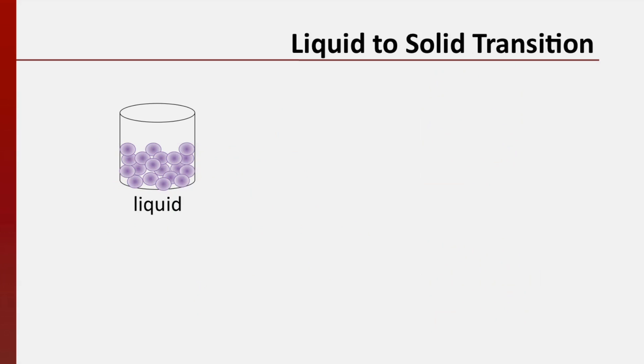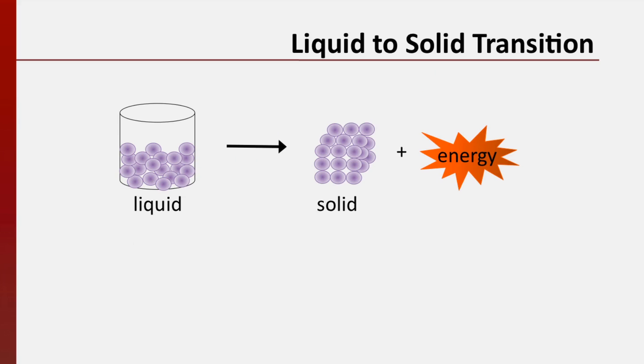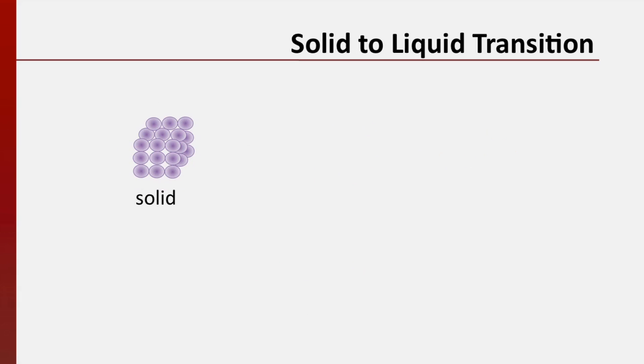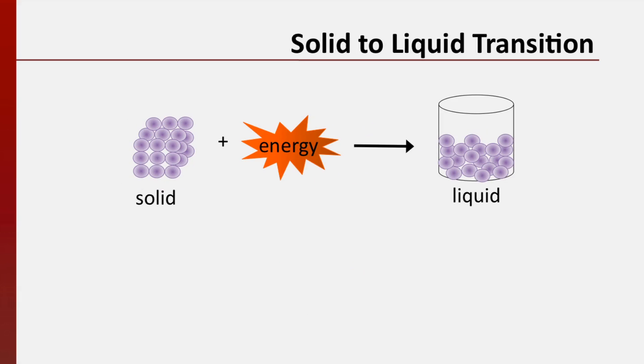Generally speaking, when a substance transitions between phases, intermolecular forces between neighboring molecules are either formed or broken. When a substance transitions from a liquid to a solid, intermolecular forces, or bonds, are formed and energy is released to the surroundings — this is called the latent heat of fusion. Going in the other direction, when a substance transitions from a solid to a liquid, energy is required to overcome intermolecular forces, so this is an endothermic process. Energy is absorbed from the surroundings — this is called the latent heat of melting. The latent heat of melting is equivalent in magnitude to the latent heat of fusion, but opposite in sign.